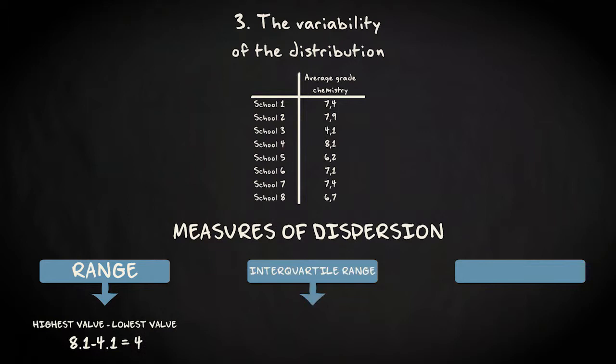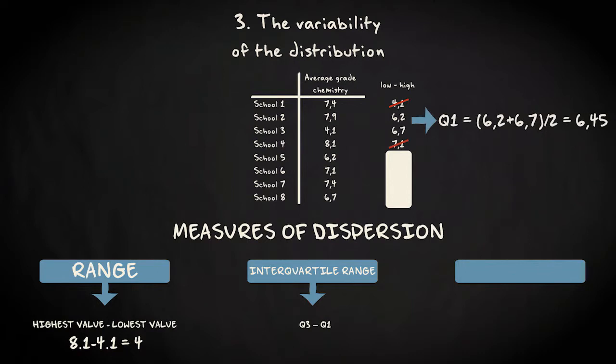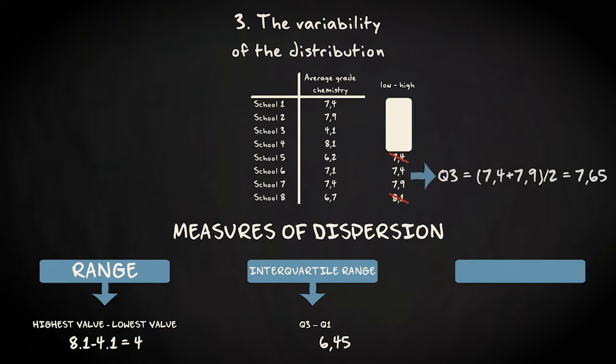The interquartile range is the difference between the first and the third quartile. So, first we have to compute Q1 and Q3. This was how we computed the median. We do the same for the left side of the distribution. Q1 is the average of 6.2 and 6.7. That is 6.45. And for the right side. That's the average of 7.4 and 7.9. That equals 7.65. Q3 minus Q1 equals 7.65 minus 6.45 equals 1.2.